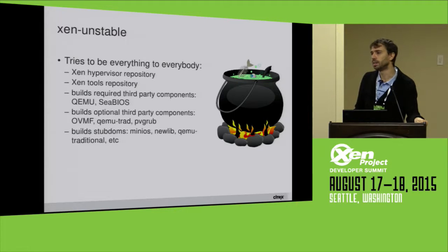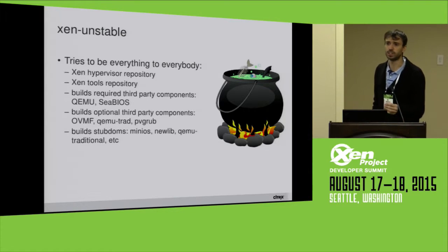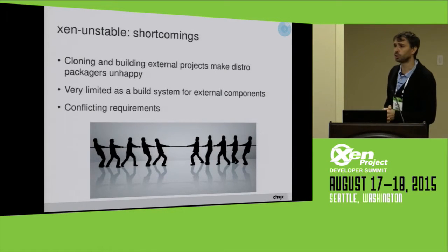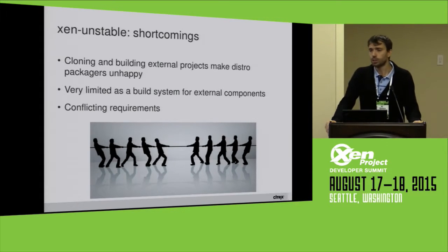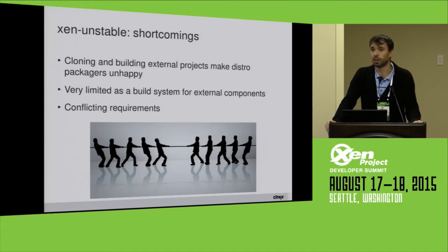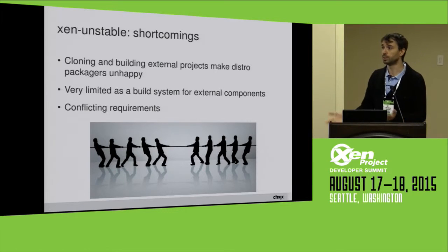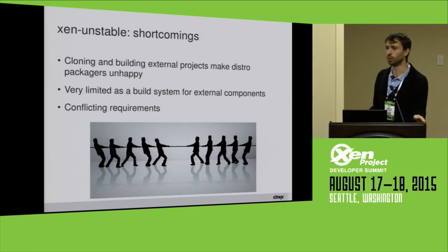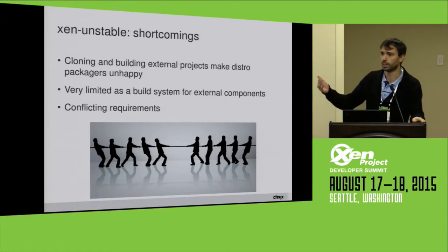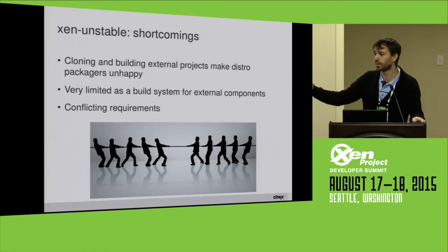Xen unstable is a bit of a big cauldron that tries to be everything to everybody and not succeeding at either of the goals it sets for itself. If you are a distro packager — for example the maintainer of the Xen package in Debian or Ubuntu — you certainly are not happy with Xen unstable going and cloning QEMU using Git as part of the Xen build. You already have a fully working build system that builds QEMU separately for Ubuntu, and you don't want to slow it down by cloning a third-party component from a third-party repository.